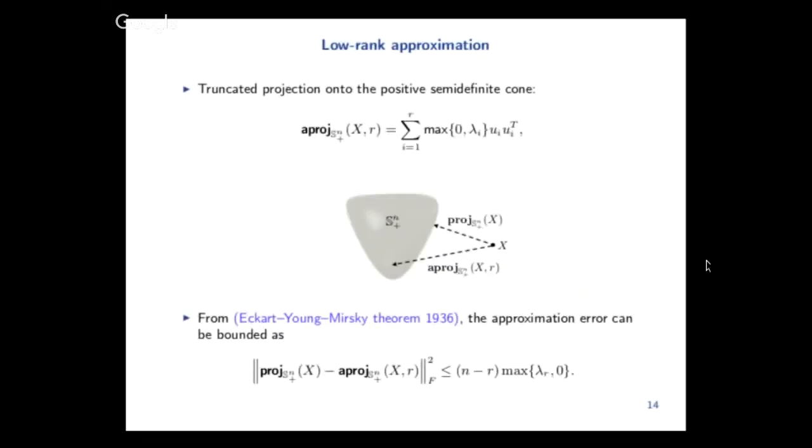The way we do this is we substitute the projection onto the positive semidefinite cone by an approximate projection where you have a number of eigenvalues that you want to see, and then you simply truncate at this eigenvalue. So it is actually a projection onto the cone, but it's not the orthogonal projection. The interesting part about this approximate projection is that you can actually bound how far away you are to the real projection. You can control the error using the Eckart-Young-Mirsky theorem, and you can know how far away you are from the real projection. In the paper we prove that if this error decays, you will converge to the optimal point.